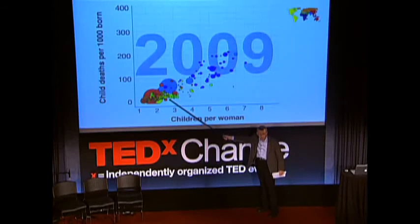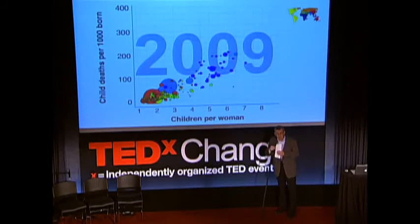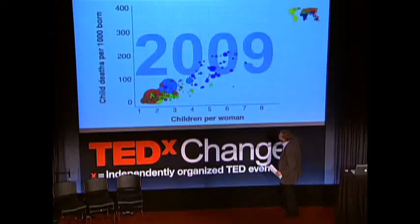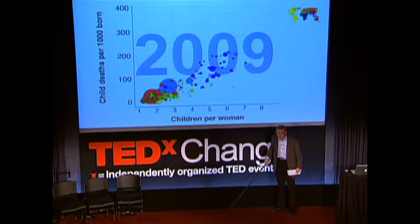It is fully possible to get child mortality down in all of these countries and bring them into the corner where we all would like to live together. Lowering child mortality is of utmost importance from a humanitarian aspect — it's a decent life for children we are talking about. But it is also a strategic investment in the future of all mankind, because we will not be able to manage the environment and avoid the terrible climate crisis if we don't stabilize the world population. The way to do that is to get child mortality down, get access to family planning, and behind that, a drive of female education. That is fully possible. Let's do it.